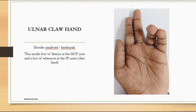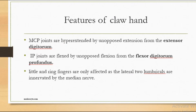In ulnar claw hand, the deformity is seen in the little finger and the ring finger. The lumbricals are paralyzed, resulting in loss of flexion at the metacarpophalangeal joint and loss of extension at the interphalangeal joint, which produces the claw deformity. The MCP joints are hyperextended because extension digitorum is working unopposed.